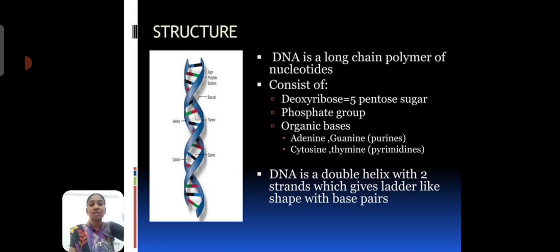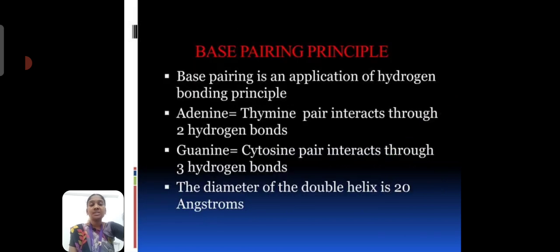Second one is base pairing principle. The base pairing principle is application of hydrogen bonding principle. The adenine combined with thymine pair interacted through two hydrogen bonds. The guanine combined with cytosine pair interacted through three hydrogen bonds. The diameter of the double helix is 20 Angstrom.